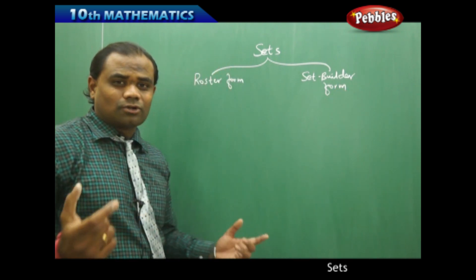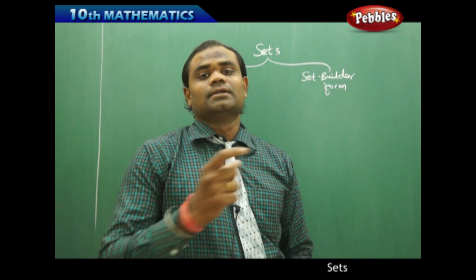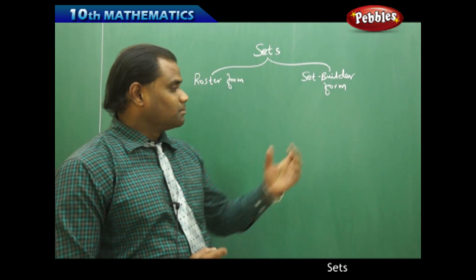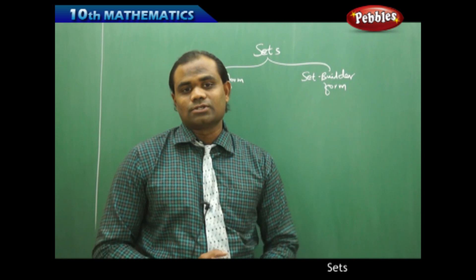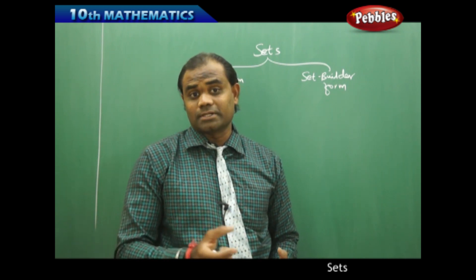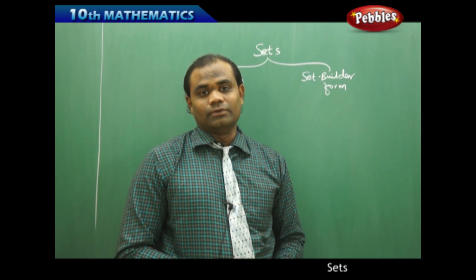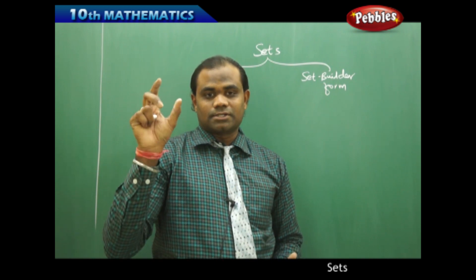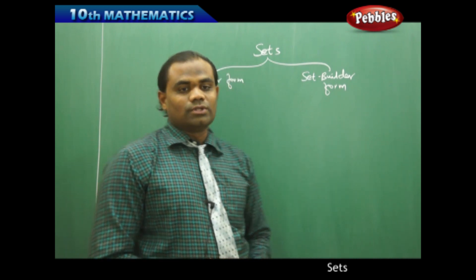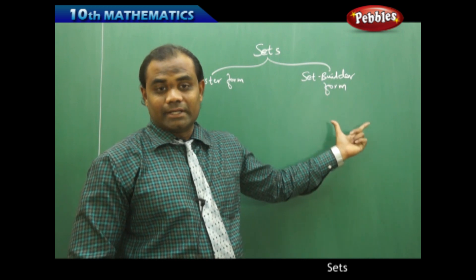So what is the roster form? A roster form is the direct inclusion of elements in the set. When it comes to the set builder form, it is not the direct way of writing the elements but an indirect form of representing elements in the set. We need to identify the statement and then write the elements in the roster form. So roster form is the direct step and set builder form includes the indirect step.